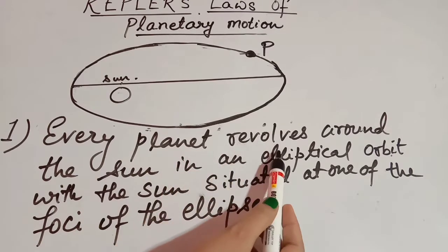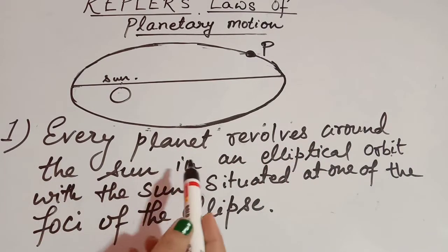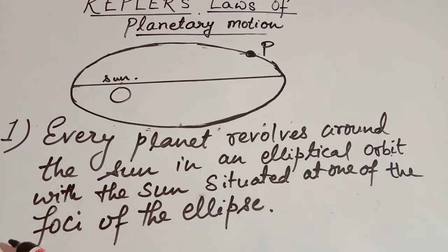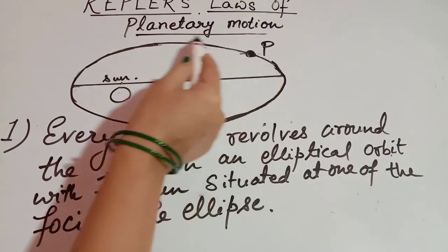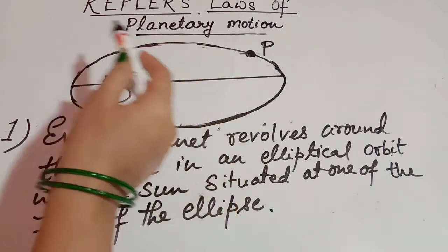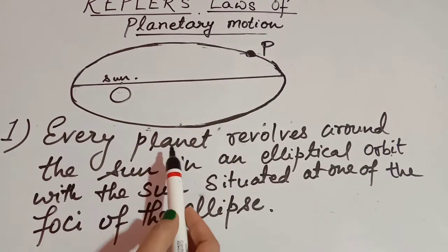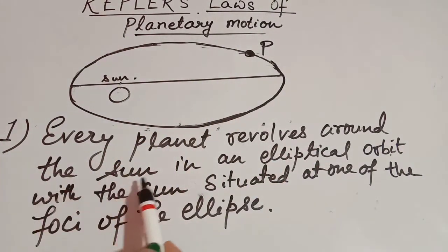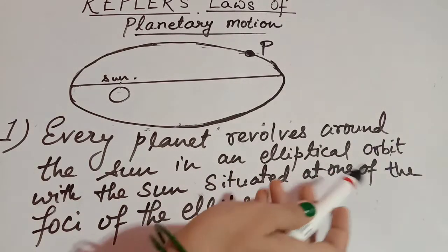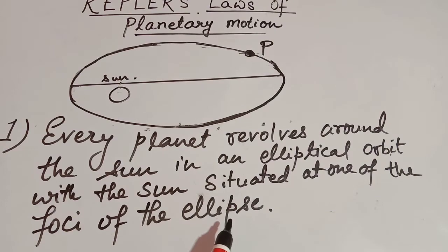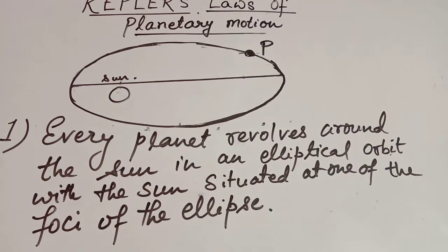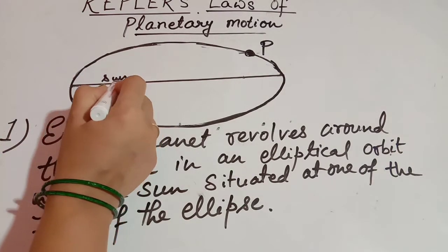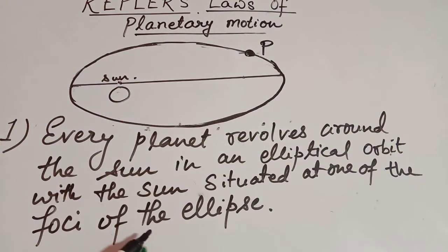According to Kepler's first law, every planet revolves around the Sun in an elliptical orbit. In the picture, P is your planet and this is the orbit of the planet — the shape is an ellipse. The Sun is situated at one of the foci of the ellipse. Foci is the plural form of focus.